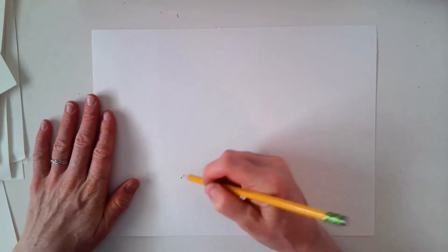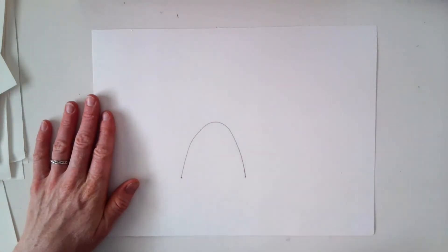We'll connect those two dots with a line in a boomerang shape, like this. This will be the front of our tent.